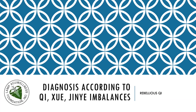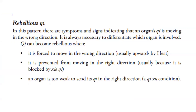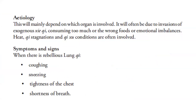Diagnosis according to Qi, Shui, Jin Ye imbalances - Rebellious Qi. In this pattern, there are symptoms and signs indicating that an organ's qi is moving in the wrong direction, and it is always necessary to differentiate which organ is involved. Qi can become rebellious when it is forced to move in the wrong direction, usually upwards by heat; when it is prevented from moving in the right direction by pathogenic qi; or when an organ is too weak to send its qi in the right direction. Etiology will often be due to invasions of exogenous pathogenic qi, consuming too much of the wrong foods, or emotional imbalances. Heat, qi stagnation, and qi deficiency conditions are often involved.